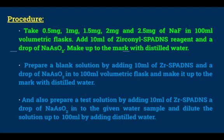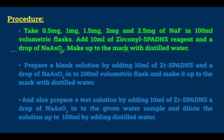For the procedure, first you have to prepare standard solutions of fluoride using sodium fluoride. Take 100 ml standard volumetric flasks and to each flask add accurately weighed amounts of sodium fluoride: 0.5 mg, 1 mg, 1.5 mg, 2 mg, and 2.5 mg. To each of these flasks add 10 ml of zirconyl SPADNS reagent and a drop of sodium arsenite. Sodium arsenite is added to prevent the bleaching action of chloride ions present in water. The solution is made up to the mark with distilled water, shaken well and kept as the standard solution.